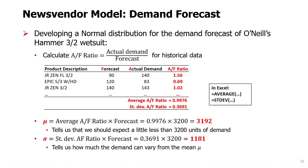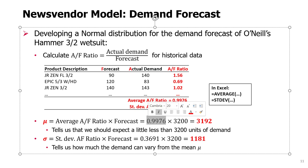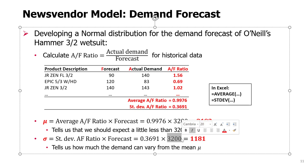Here is a summary of what we did. We took historical demand and forecast data from O'Neill's products — products forecasted using the same procedure. We calculated AF ratios, which are actual demands divided by forecasted values. If the ratio is close to one, it's a good forecast; lower than one means we overestimated; higher than one means we underestimated. Then we calculated the average and standard deviation, and multiplied each by the one-point forecast to obtain mu and sigma for the normal distribution of demand for O'Neill's Hummer wetsuit.